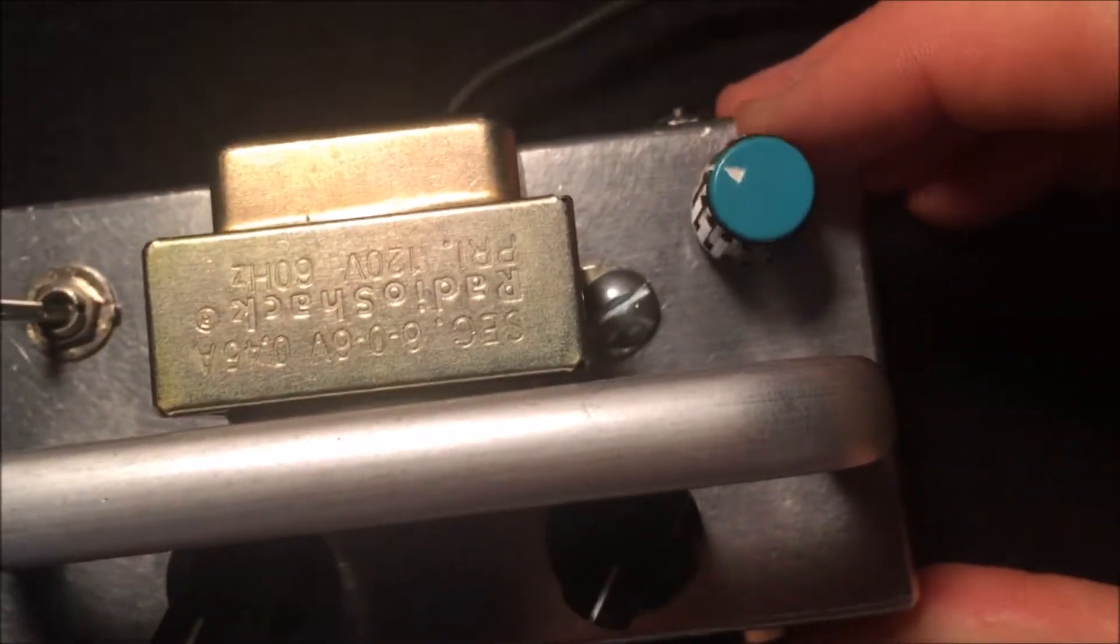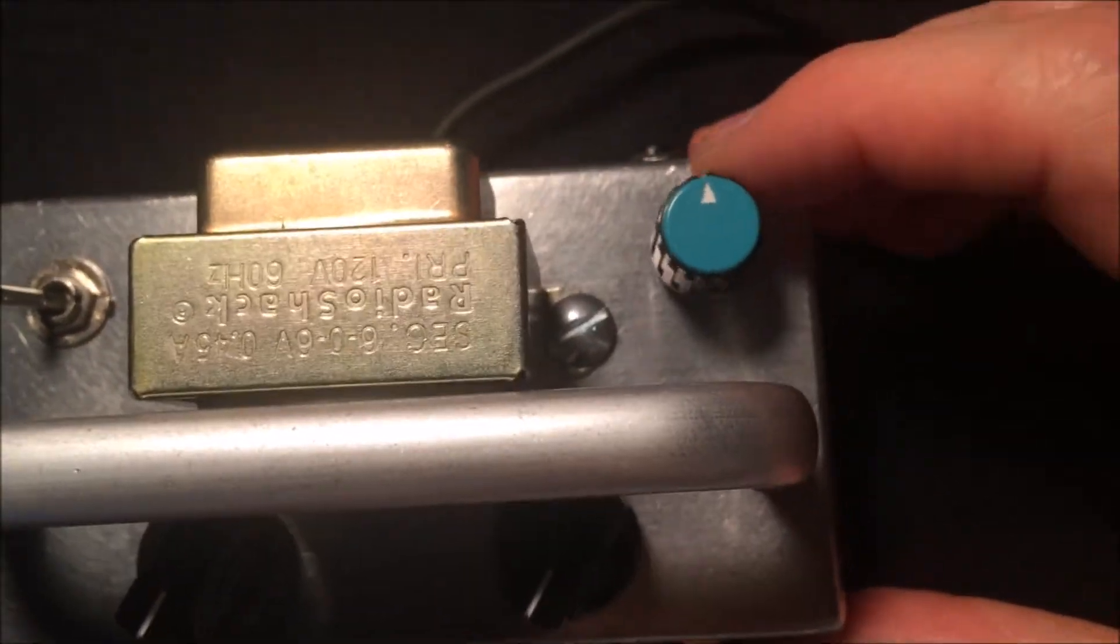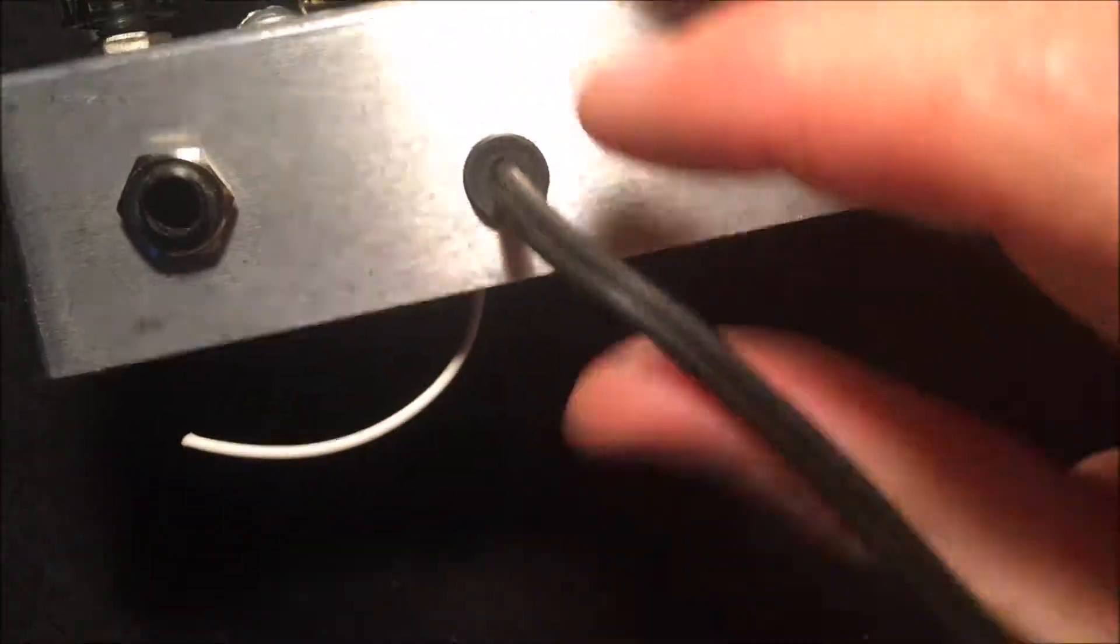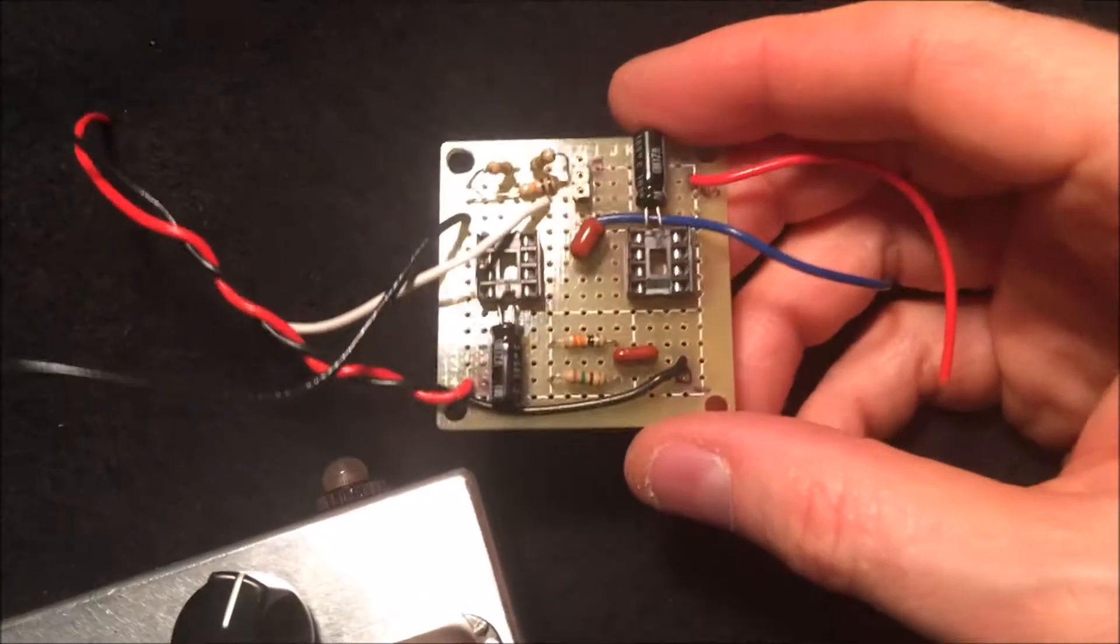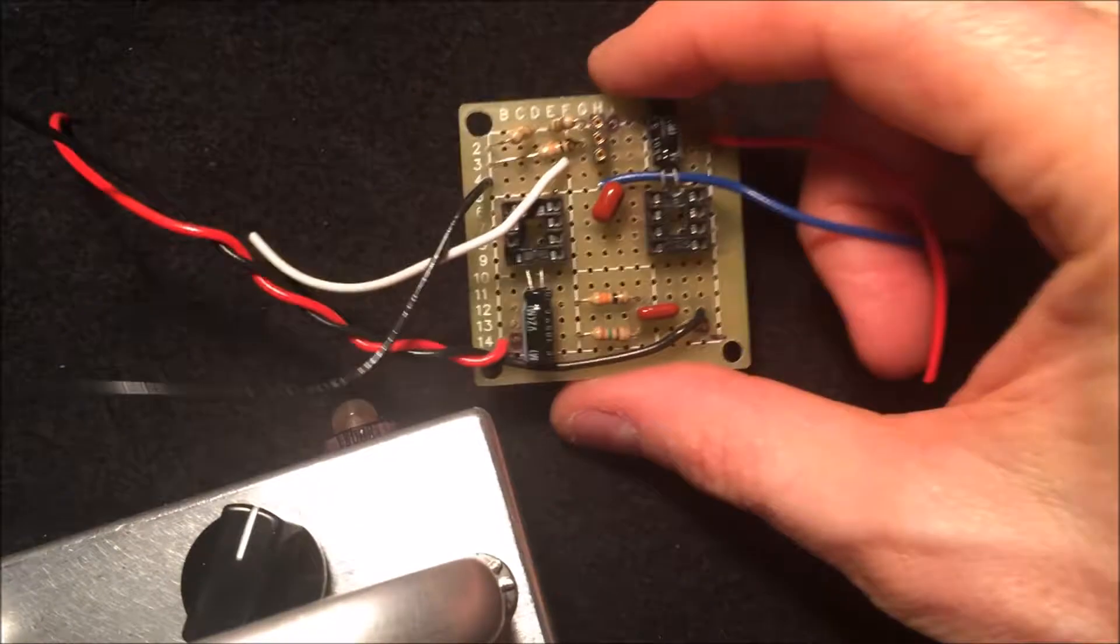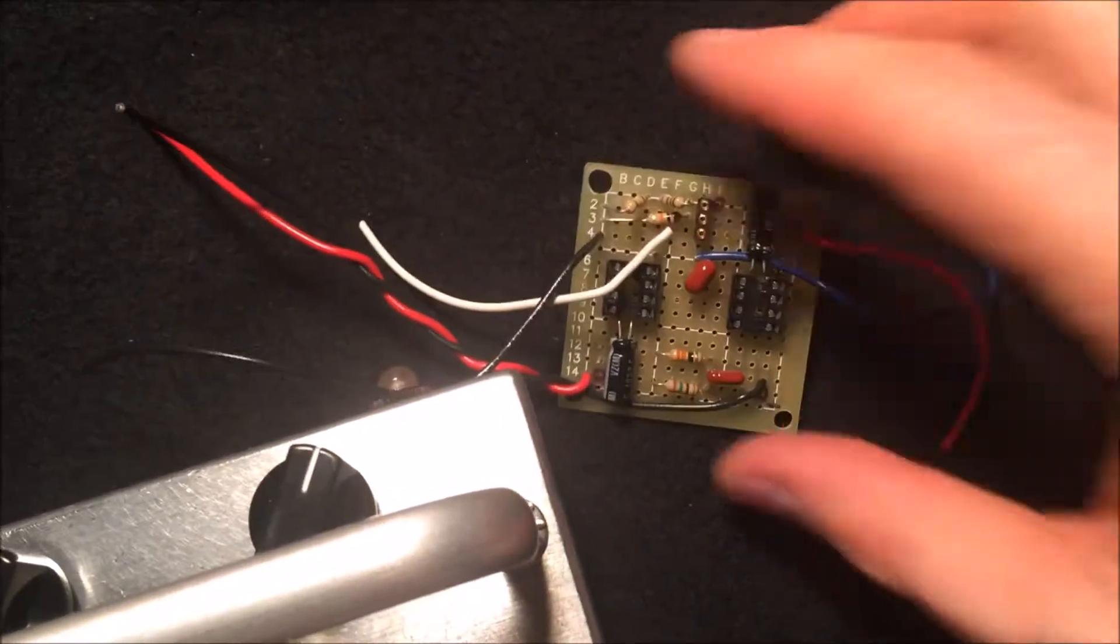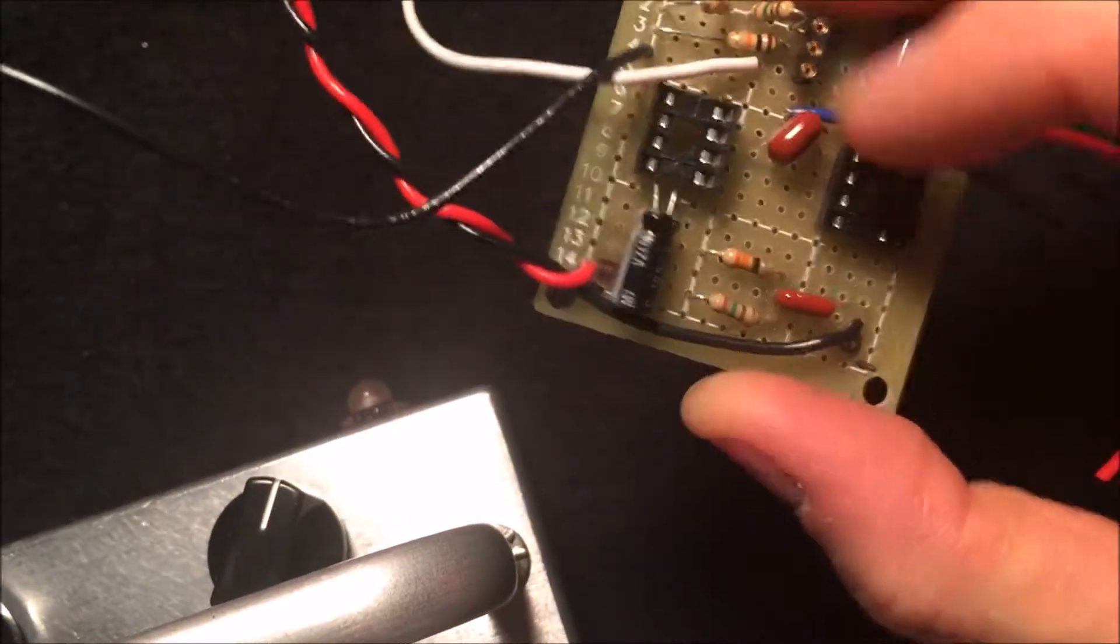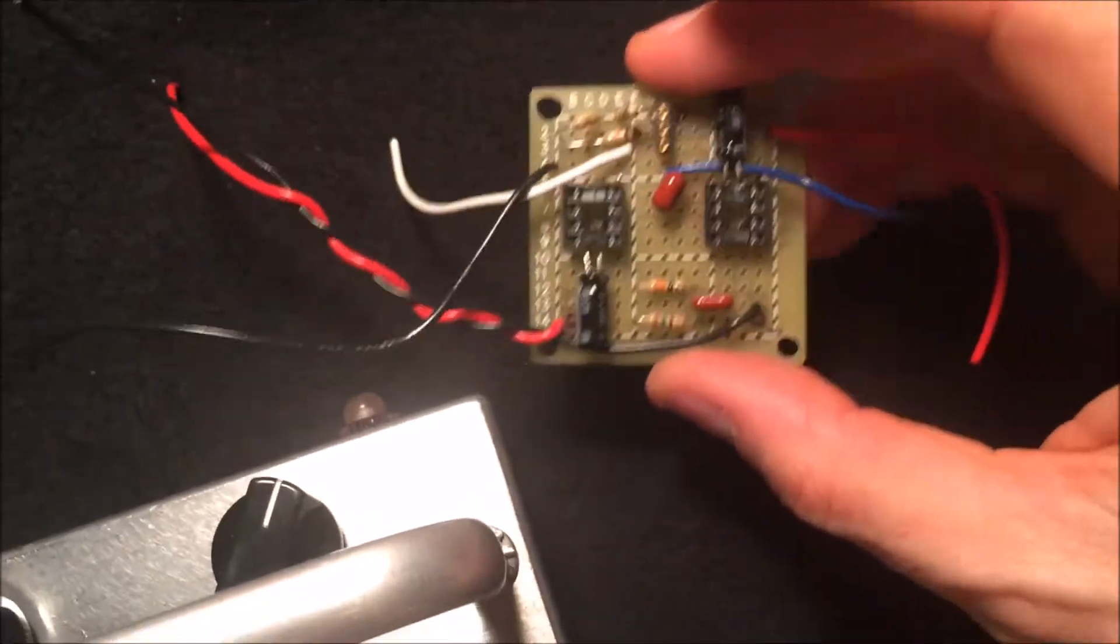On-off switch, and this is a little volume on the input so I don't overdrive the circuit depending on what I plug into it. Power cord with a little grommet, and the circuit board wired up. The only thing I'm waiting for is the LM386s to come in the mail, probably tomorrow.